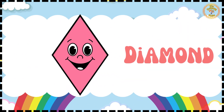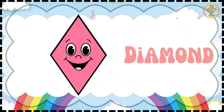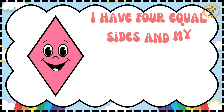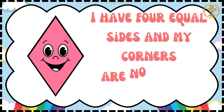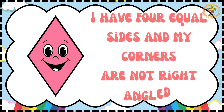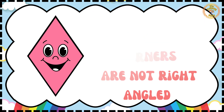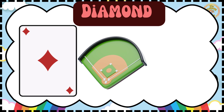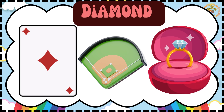Hello, kids. I am Diamond. I have 4 equal sides and my corners are not right angled. I am like a rhombus. You will spot me in cards, baseball fields and jewelry.